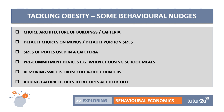Another nudge is removing sweets from checkout counters. Tesco was one of the first supermarkets to take away sweets and other attractive items for kids from their checkout counters, to act as a nudge to reduce impulse buying. One interesting idea suggested by a student was to add calorie details to receipts at checkout — it doesn't necessarily change the immediate purchase, but getting calorie details after the fact could be interesting information.